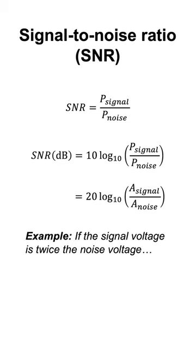For example, if the signal voltage is twice the noise voltage, then the signal-to-noise ratio in decibels would be 6. You want a big number there.